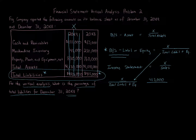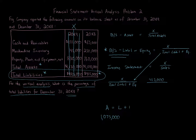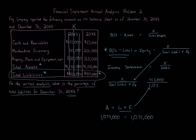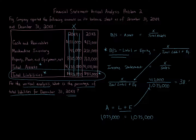We use the accounting equation to find total liabilities plus stockholders' equity. Assets equal liabilities plus equity, and total assets for 20x8 is $1,075,000. Therefore, liabilities plus equity also equals $1,075,000, which becomes our denominator. We don't need to know equity separately — we just use $1,075,000. So the percentage is $415,000 divided by $1,075,000, which equals 38.60 percent.